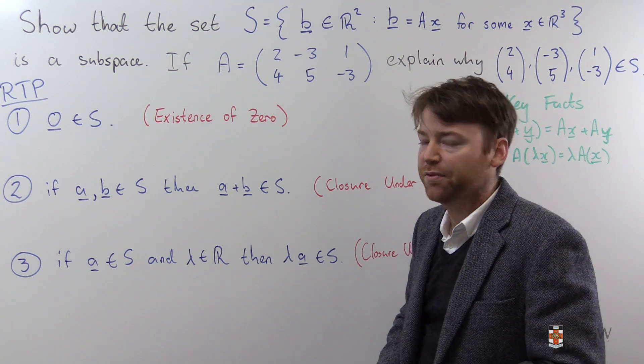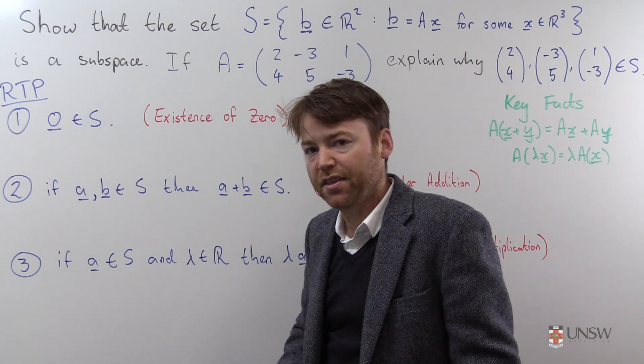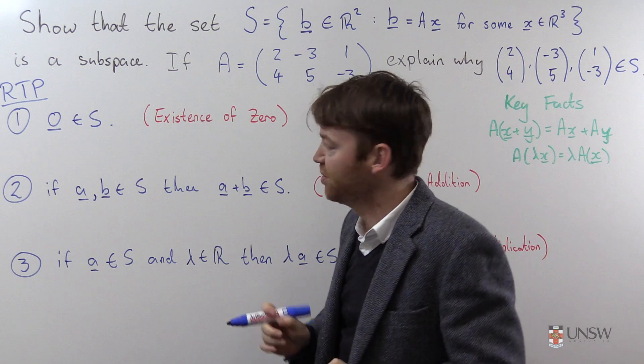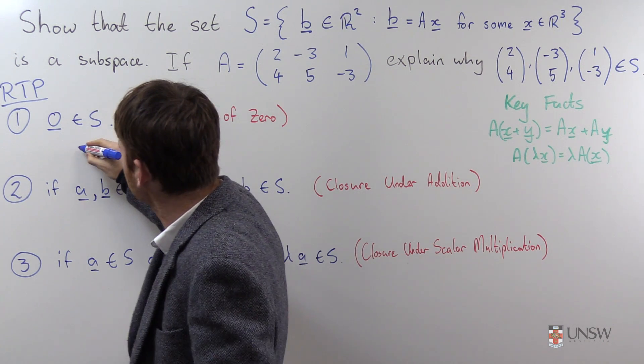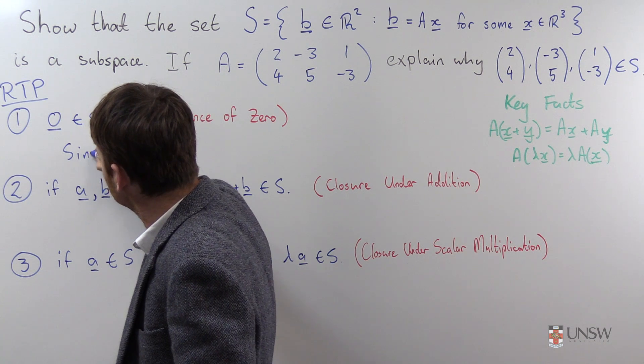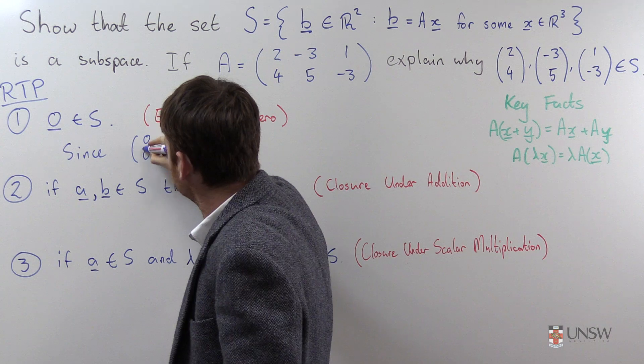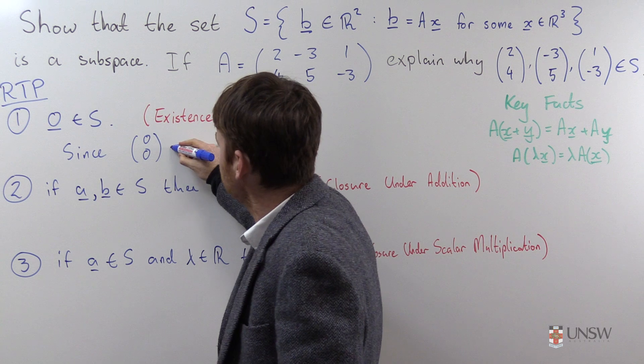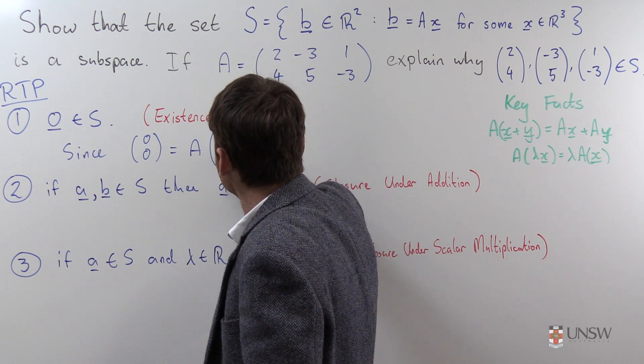The first thing we have to prove is that 0 is in the space. Now you can't just say 0 is in the space. There's something about the space that makes this work. So let's first of all say that 0, which 0 are we talking about here? Well it's 0 0, the 0 from R2. Since 0 0 is equal to the matrix A times the vector 0 0 0,